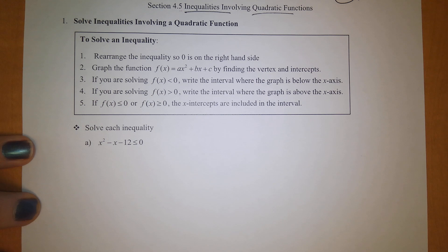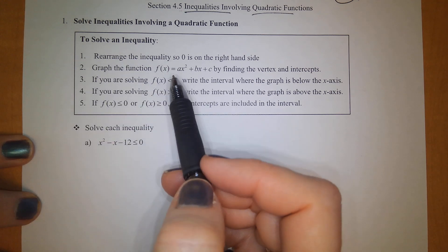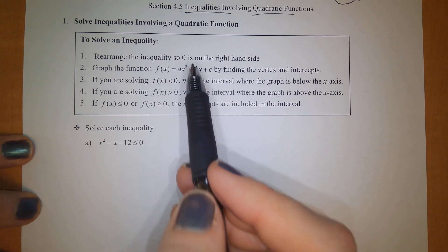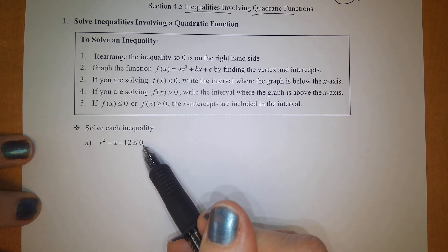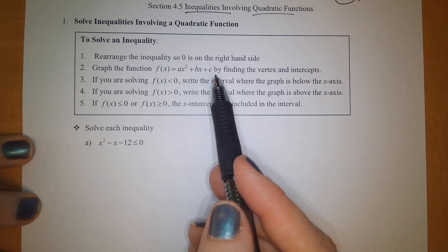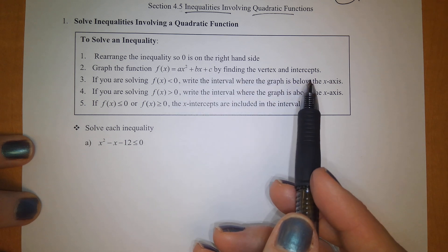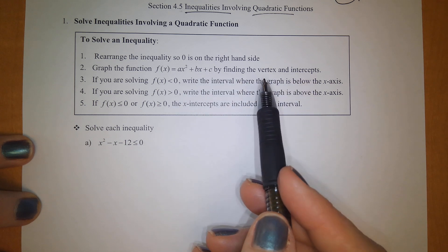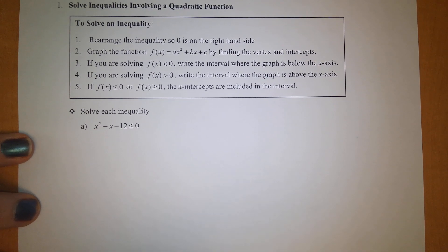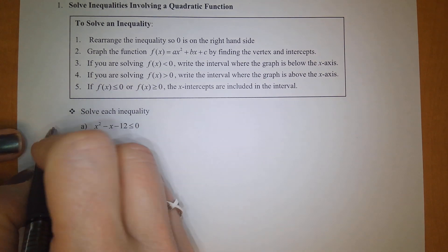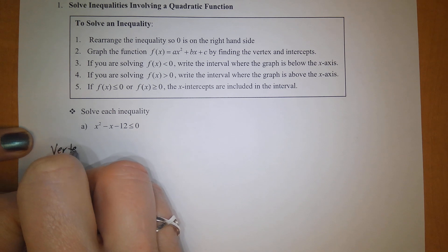There are some steps involved in solving inequalities. The first thing I would suggest is to rearrange the inequality so that 0 is on the right-hand side — this one has already been done for you. Then graph the function by finding the vertex and the intercepts, which we already know how to do. So let's go ahead and do step 2 and find the vertex first.